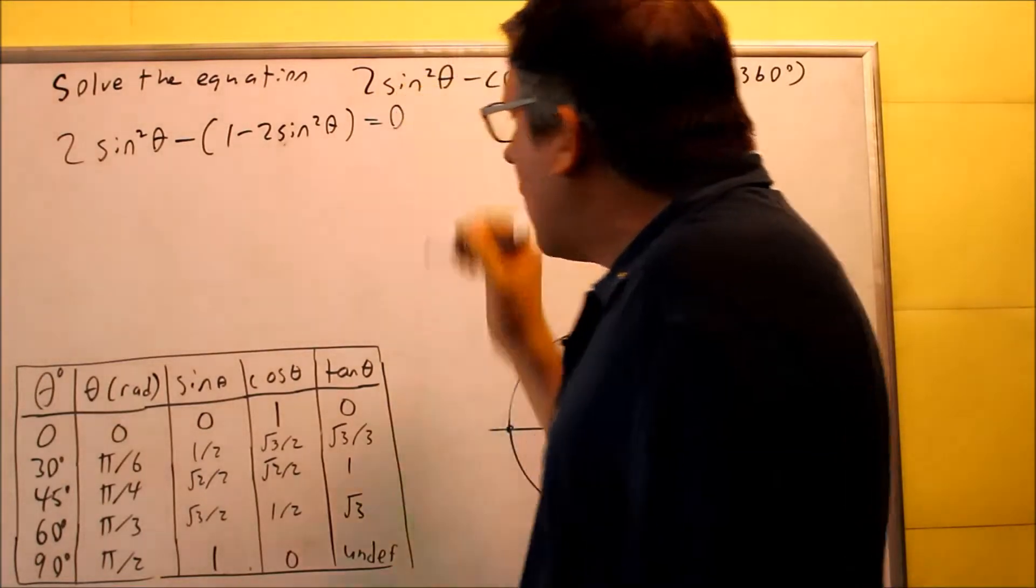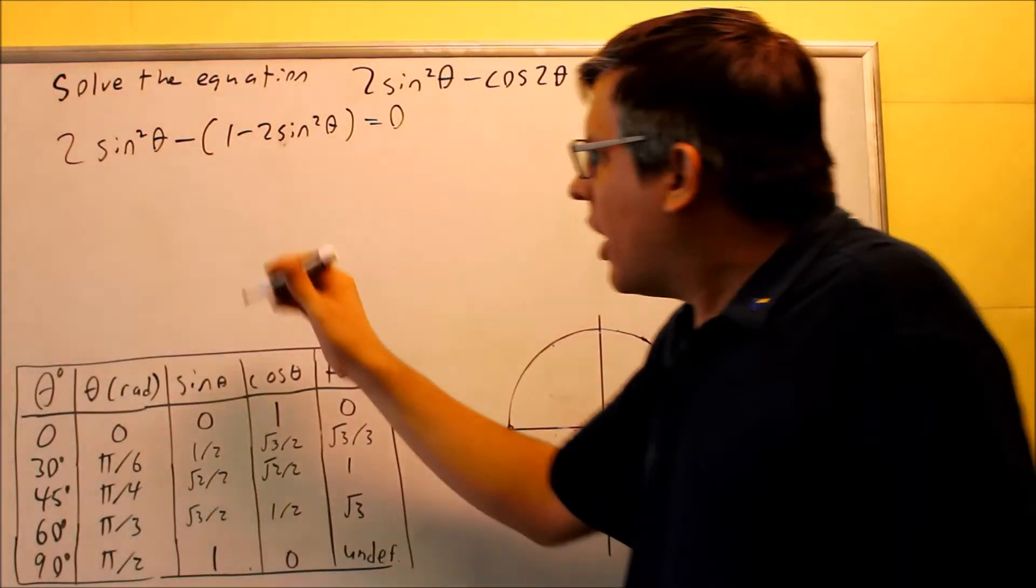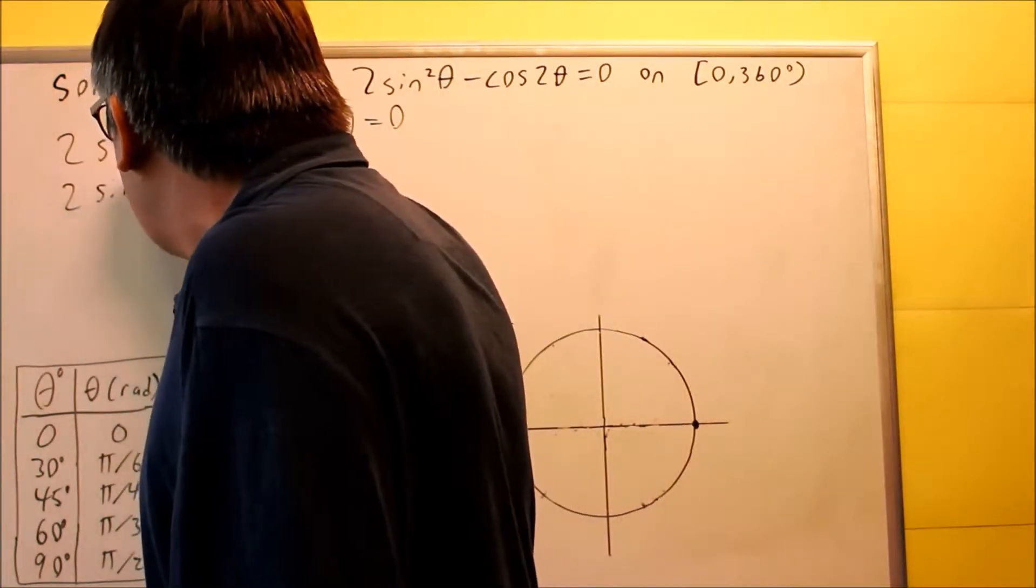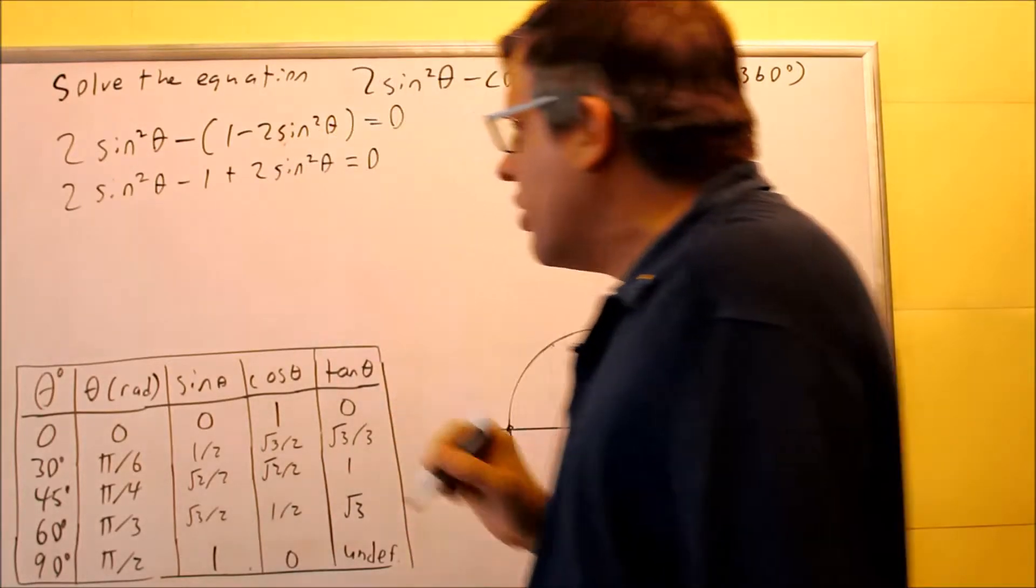Now that I've done that, I have like terms I can combine together. We want to distribute the minus sign, so I have minus one plus 2 sine squared theta equals zero. Be sure to distribute the minus sign there.